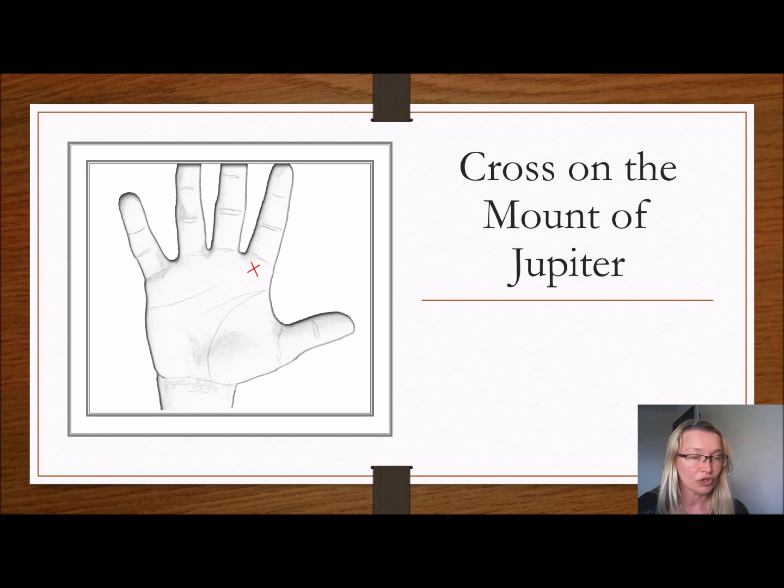We have a cross on the Jupiter mount. Traditionally, a cross on this mount is depicting a secure marriage with a supportive partner. So it's slightly different.